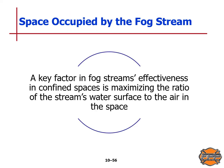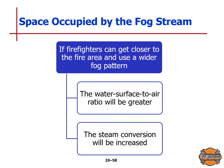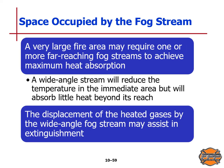A key factor in fog stream effectiveness in confined spaces is maximizing the ratio of the stream's water surface to the air in the space. Both the size of the area occupied by fire and the firefighter's ability to safely access that area affect the width and reach used. If firefighters can get closer to the fire area and use a wider fog pattern, the water surface to air ratio will be greater and steam conversion will be increased. A very large fire may require one or more far-reaching fog streams to achieve maximum heat absorption. A wide-angle stream will reduce temperature in the immediate area but will absorb little heat beyond its reach. The displacement of heated gases by wide-angle fog streams may assist in extinguishment.